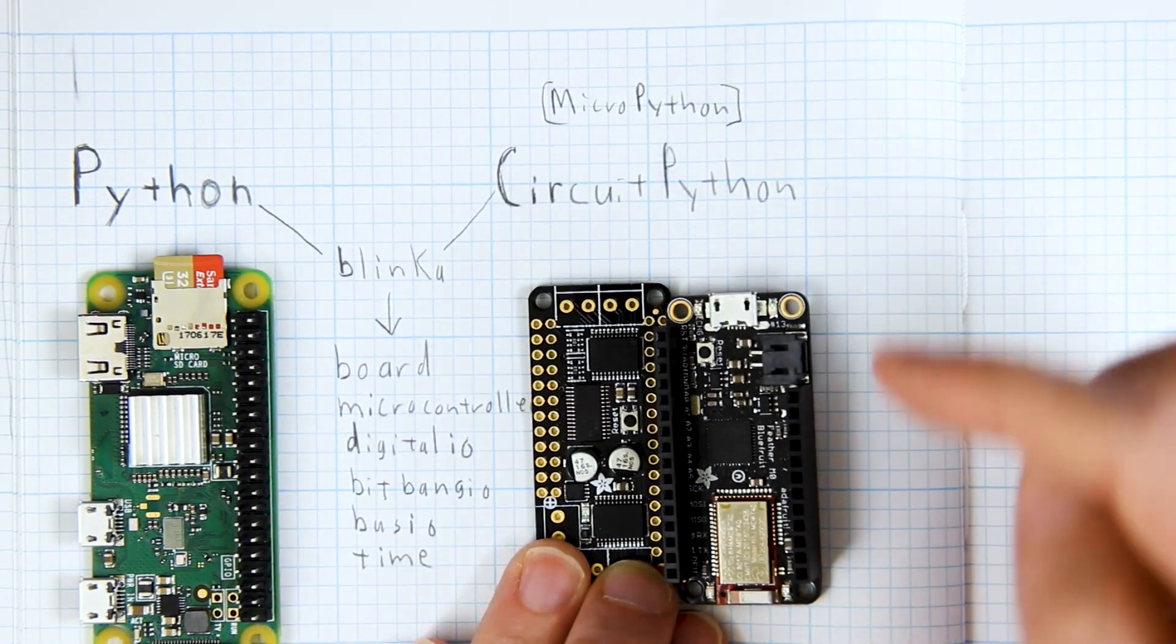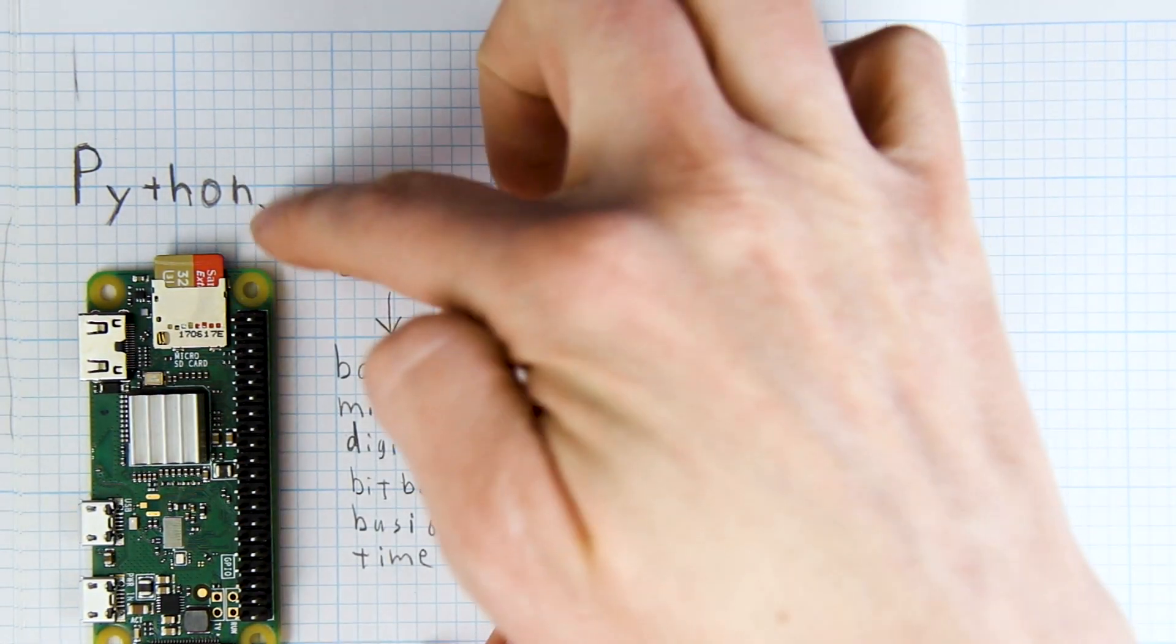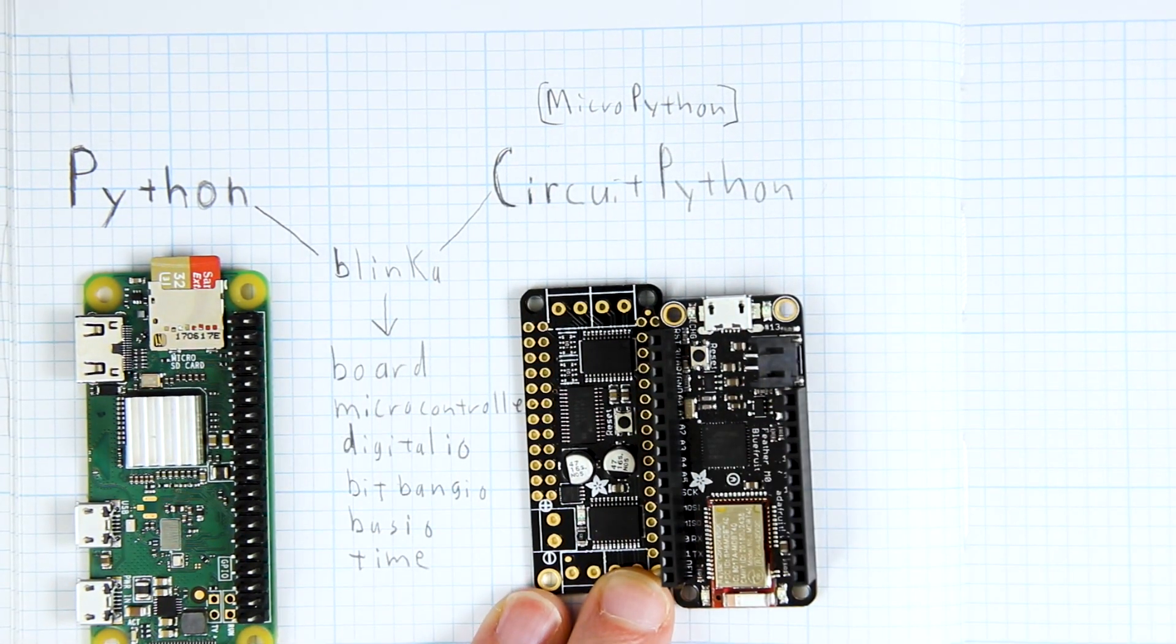So we need to install some libraries that are going to be able to translate between Python and CircuitPython so your hardware knows what it should be doing.